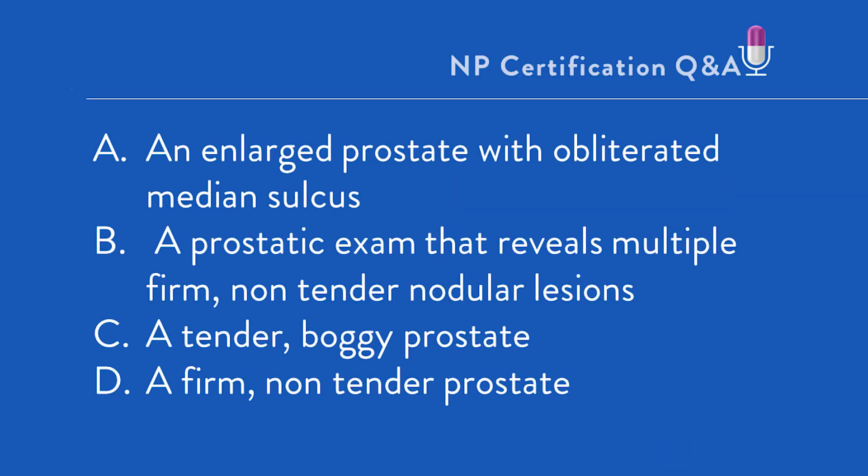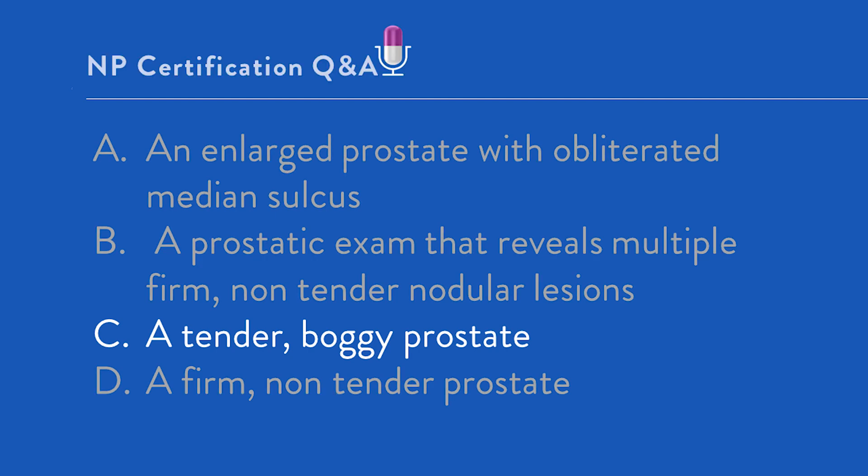A: an enlarged prostate with obliterated median sulcus. B: a prostatic exam that reveals multiple firm, non-tender nodular lesions. C: a tender, boggy prostate. Or D: a firm, non-tender prostate. The correct option here is C, a tender, boggy prostate.